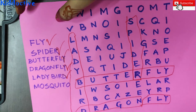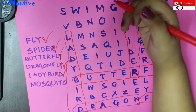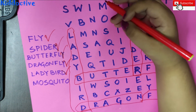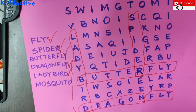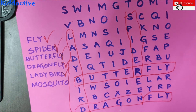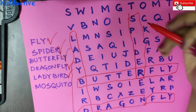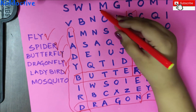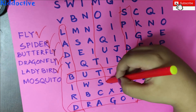Mosquito. Mosquito — where is it? M-O-S-Q-U-I-T-O. Very good. You got it? Yes! Good job, Sai.